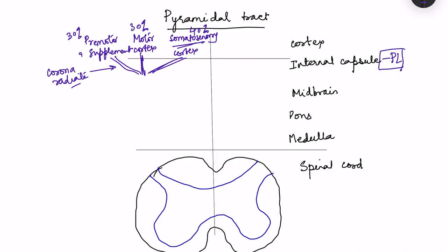The internal capsule has an anterior limb, genu, and posterior limb. All pyramidal tract fibers pass via the posterior limb. This is clinically important: injury to the posterior limb of the internal capsule will affect all fibers of the pyramidal tract. In contrast, a cortical injury in a particular area will affect only some fibers.